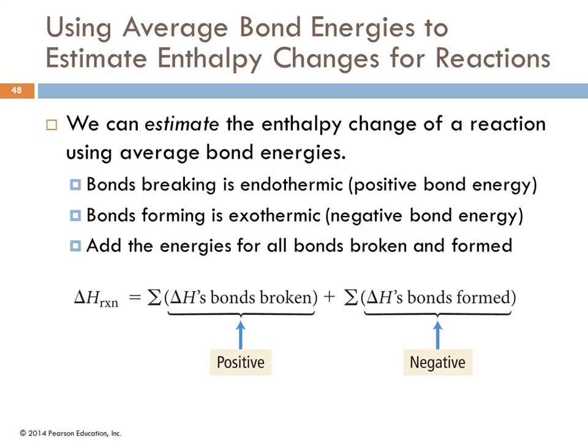So we take, for a heat of reaction, this is an estimate, the change in enthalpy for breaking all the bonds and for making the new bonds. These are going to be negative because the bonds are being formed, these are going to be positive.